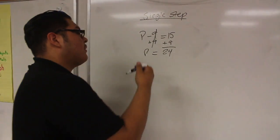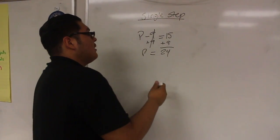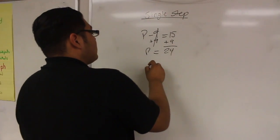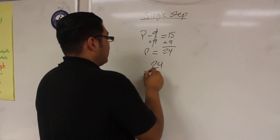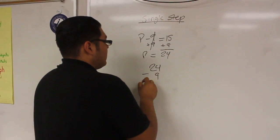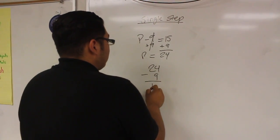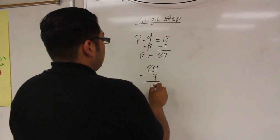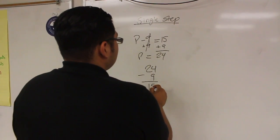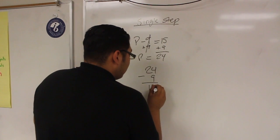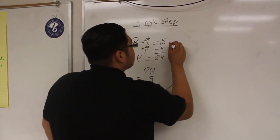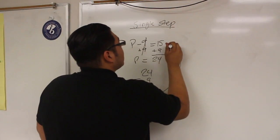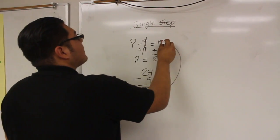p equals 24. And if you want to check it, all you have to do is 24 minus 9, and it should give you 15. And it's correct because this 15 is right here, and that's how you check it.